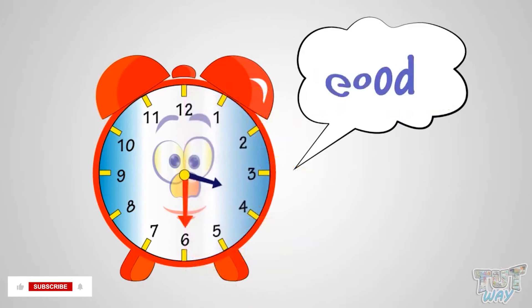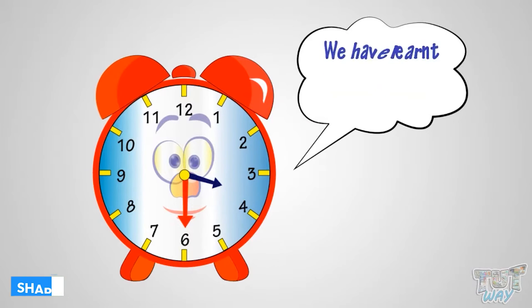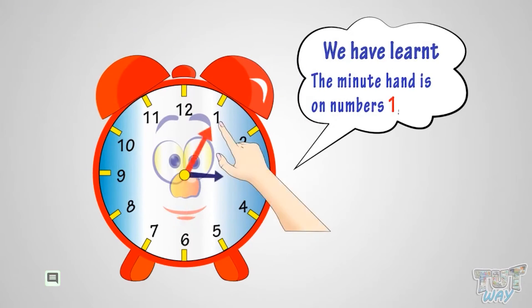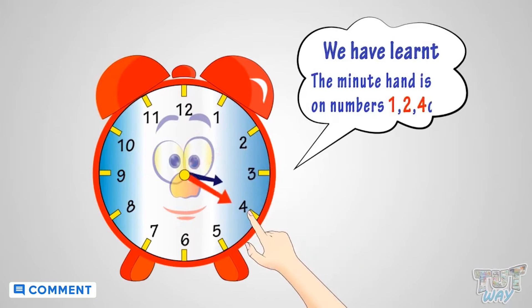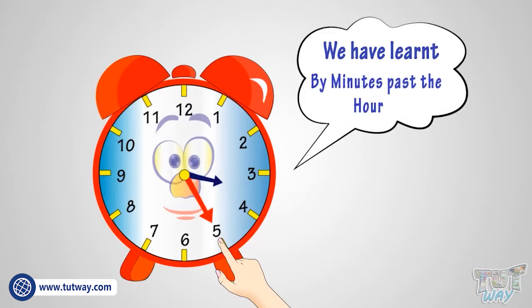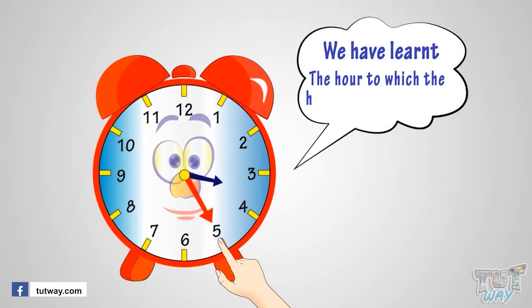Good! So what have we learnt? When the minute hand is on numbers 1, 2, 4, or 5, we tell time by minutes past the hour. Minutes past which hour? The hour to which the hour hand seems closer.